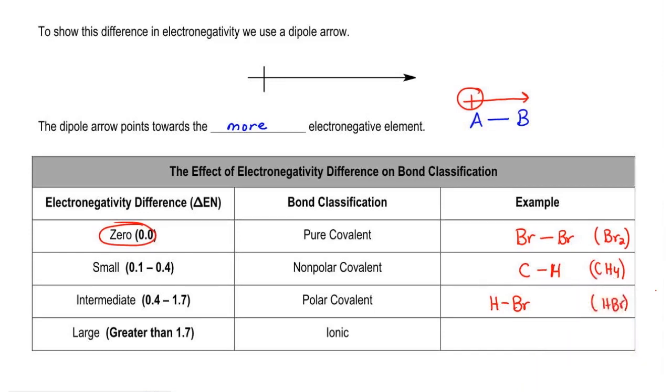If the difference was greater than 1.7, then it would be classified as an ionic bond. So if we had Na with F, definitely their numbers would be greater than 1.7. So their bond would be classified as an ionic bond.